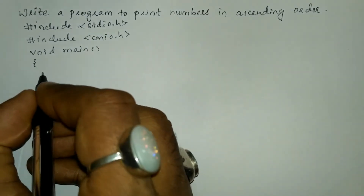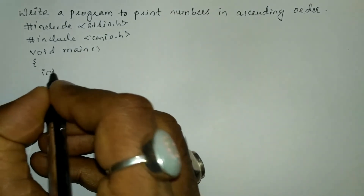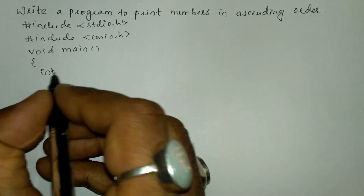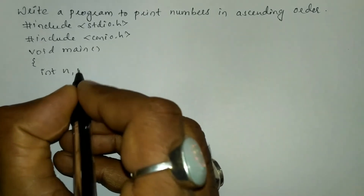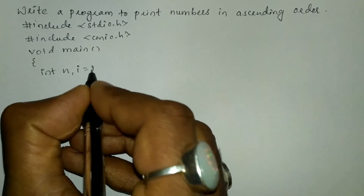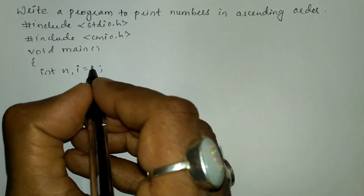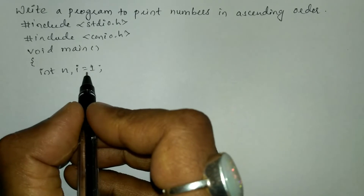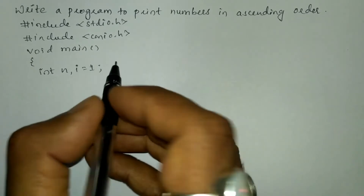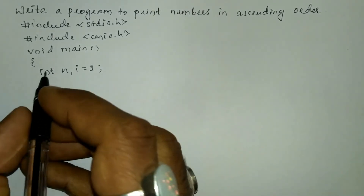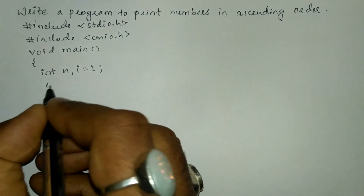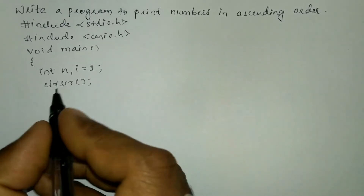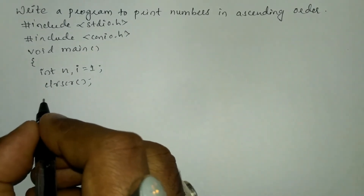Here I'm going to declare the necessary variables which are to be used in the program with data type int: n, and i is equal to one, because normally natural numbers start from one. Now we'll write the clrscr function which is used to clear the screen.